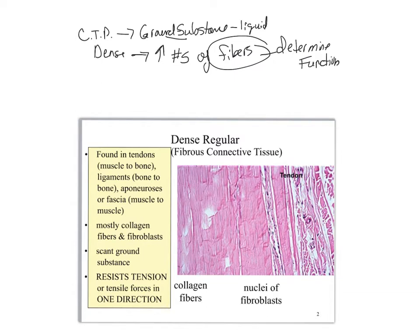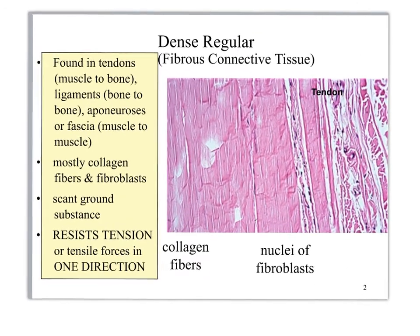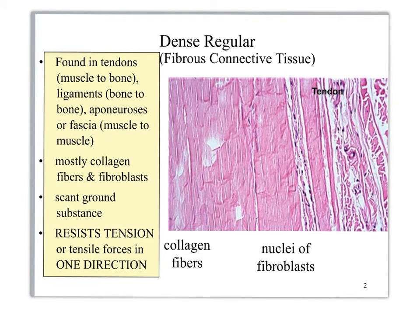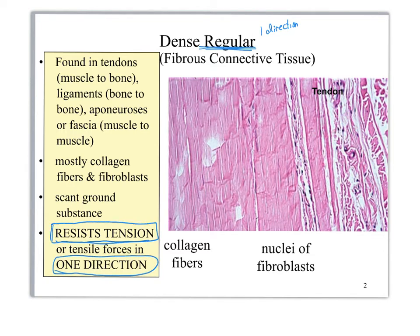With dense regular, we're focusing on the word 'regular,' which means regular direction — one direction. The major feature of dense regular is that the collagen fibers are going in one direction, which means functionally, because collagen resists tension, it's going to resist tension in one direction. That's what you need to write down as a function, and it needs to be both parts: resist tension in one direction.